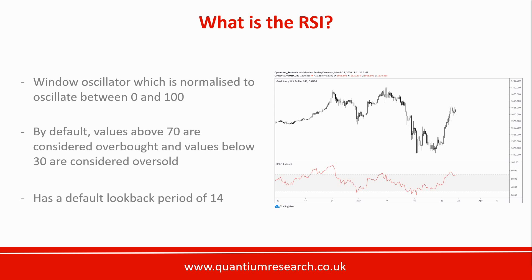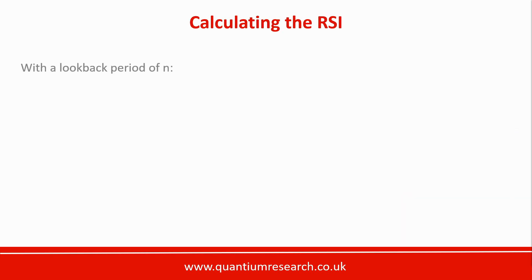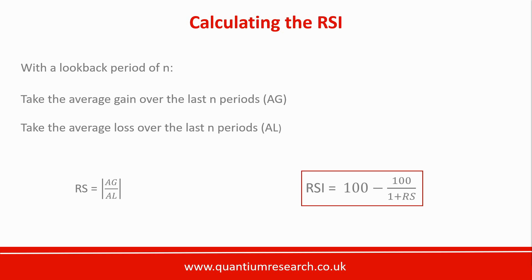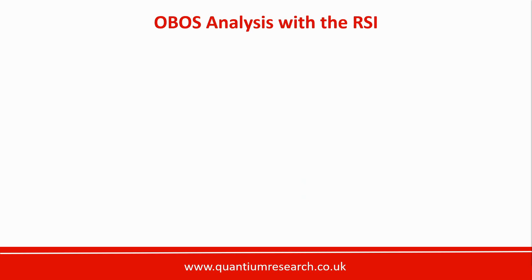The default lookback period is 14, which is a measure of how many bars or candlesticks are used in the calculation. To calculate the RSI with a lookback period of N, we find the average gain over the lookback period and the average loss. Relative Strength is the absolute value of average gains over average losses — AG over AL — and RS then goes through a normalization formula that makes all values come out between 0 and 100 irrespective of market or time frame.